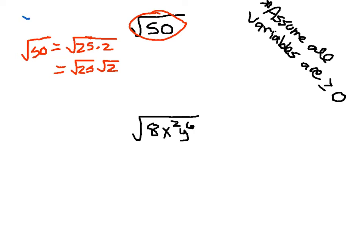The general property is: the square root of A·B can be broken apart as the square root of A times the square root of B. So if we have a product underneath the square root, we can break that up as the product of those square roots. We can also go the other way — if we have the square root of A times the square root of B, as long as both are defined, you can combine them. Breaking it apart is what helps us here. Taking 50 as 25 times 2, we get the square root of 25 times the square root of 2, which equals 5 times the square root of 2.